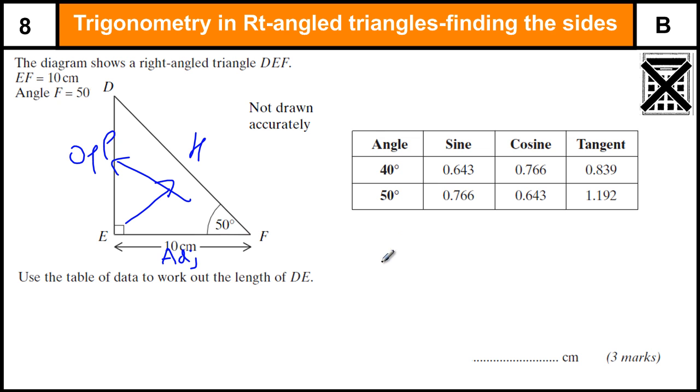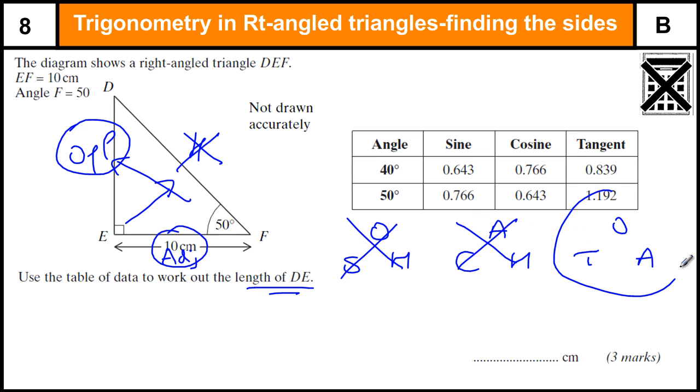I'm going to write my three trigonometry formulas: sin equals opposite over hypotenuse, cos equals adjacent over hypotenuse, tan equals opposite over adjacent. In this question we're trying to work out the length of DE. DE is the opposite side, we're given the adjacent side, so we're not using the hypotenuse. I'm going to be using the tan formula.